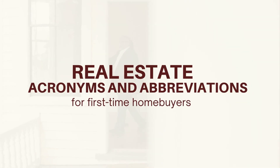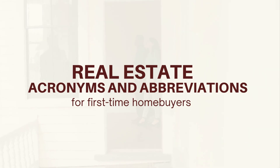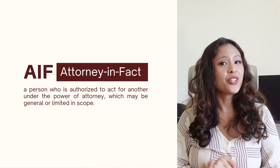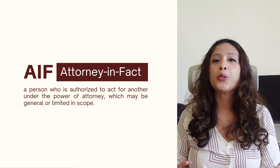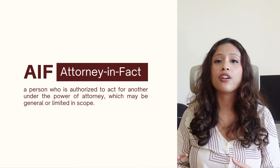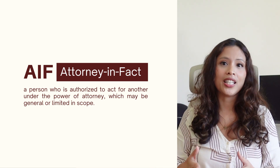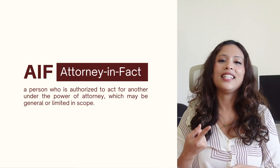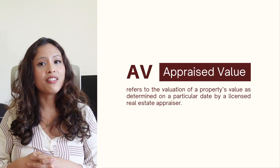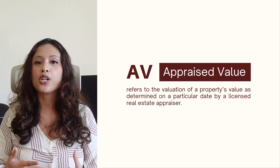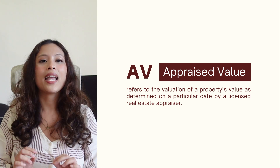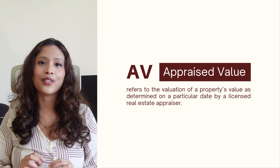Let's start! First, I'll share the acronyms and abbreviations first-time homebuyers would want to know. AIF, for Attorney in Fact, is a person who is authorized to act for another under the power of attorney, which may be general or limited in scope. AV, for Appraised Value, refers to the valuation of a property's value as determined on a particular date by a licensed real estate appraiser.